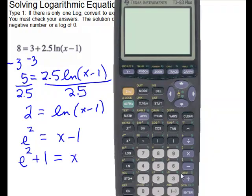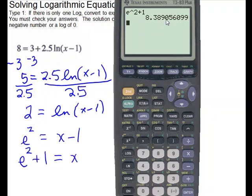We can get a decimal approximation with our calculator. We do e to the 2nd power plus 1 and press enter, giving us 8.3890. Going out 3 decimal places, the 0 is not going to push it up, so we have 8.389. We check our answer: plugging in 8.389 minus 1 gives us something positive, so our answer is fine.